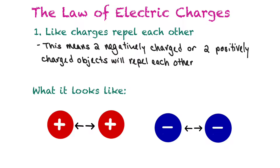Now we'll talk about the law of electric charges. First, like charges repel each other — two negatively charged or two positively charged objects will push away from each other. This is similar to magnets: two north poles repel each other and two south poles repel each other. So like charges behave much the same way.